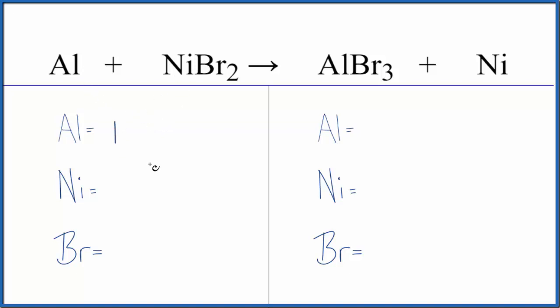We have one aluminum, one nickel, and two bromine atoms. Product side, we have the one aluminum, we have one nickel, three bromine atoms.